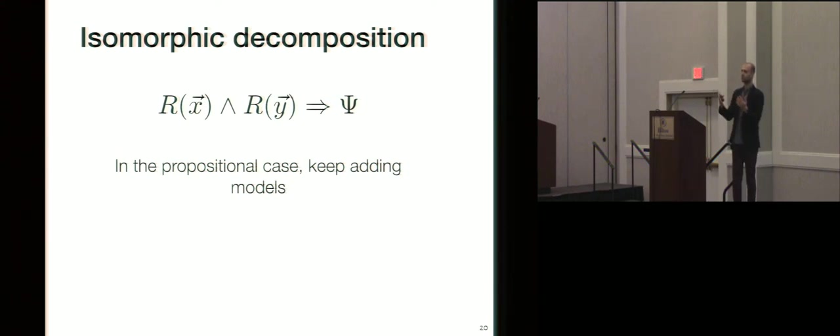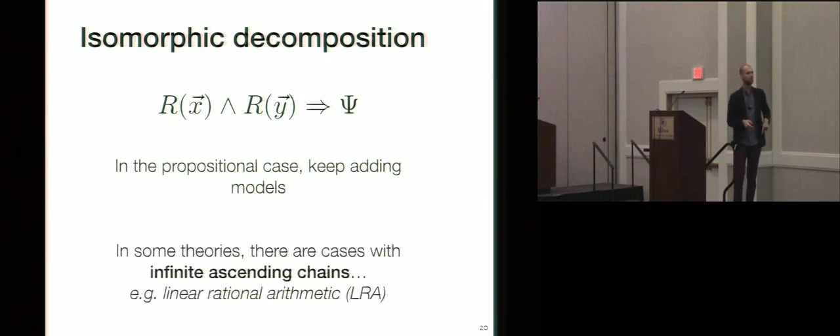So it turns out in the propositional case, of course, you'll end up terminating, because there's finitely many models. There are theories for which there isn't actually a maximal solution representable in that theory. So there's an infinite ascending chain of weaker and weaker solutions. So in linear rational arithmetic, for instance, we can keep weakening and weakening and weakening forever, because there isn't a closed form. And if you're interested, ask me in the question and answer period. I'll show you a cool example.